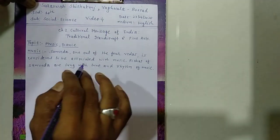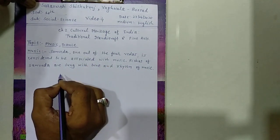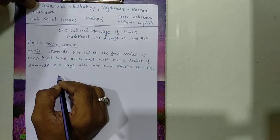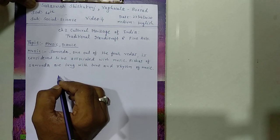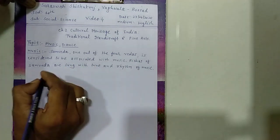Music involves both singing and playing. Singing refers to vocal music, while playing means playing a particular musical instrument — for example, Tabla, Sitar, Tanpura, Sarangi, etc. These are examples of playing music.